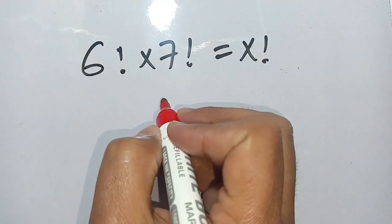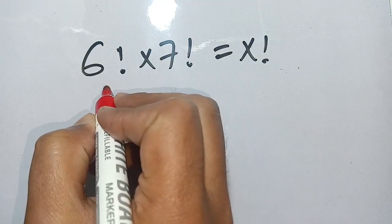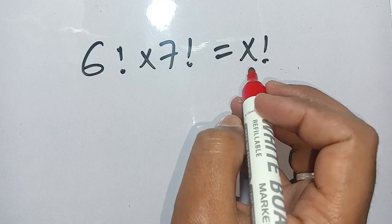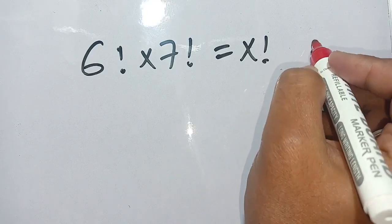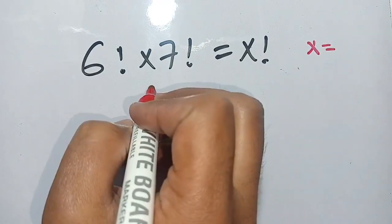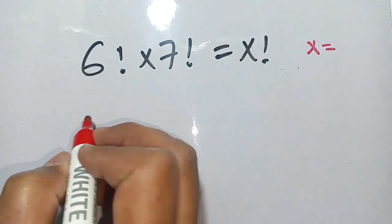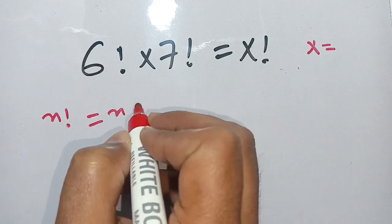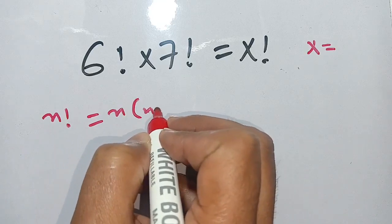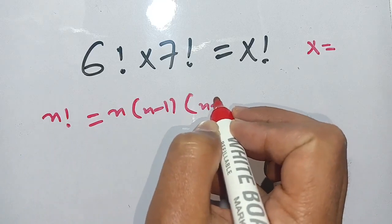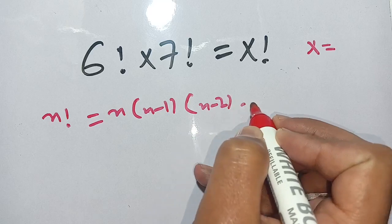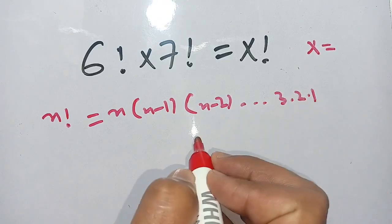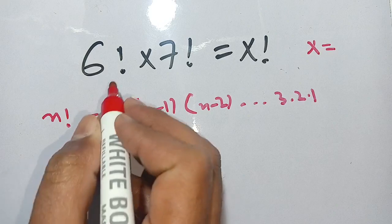Hello everyone. How to solve this factorial problem: 6 factorial times 7 factorial is equal to x factorial. We have to find the value of x which satisfies this equation. We know that n factorial is equal to n times n minus 1 times n minus 2, up to 3 times 2 times 1.